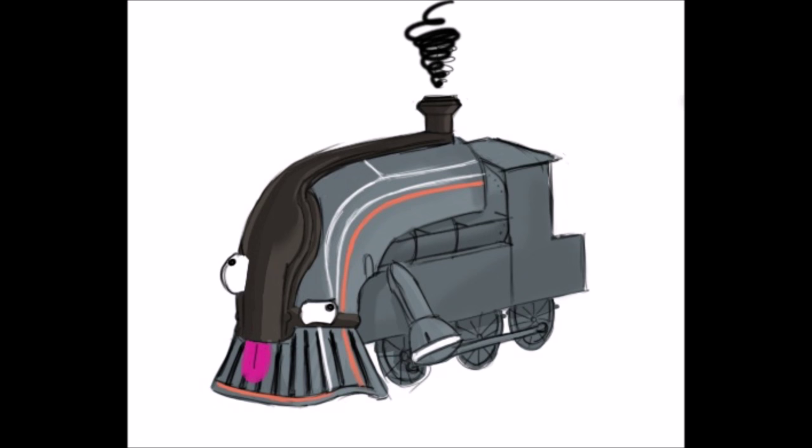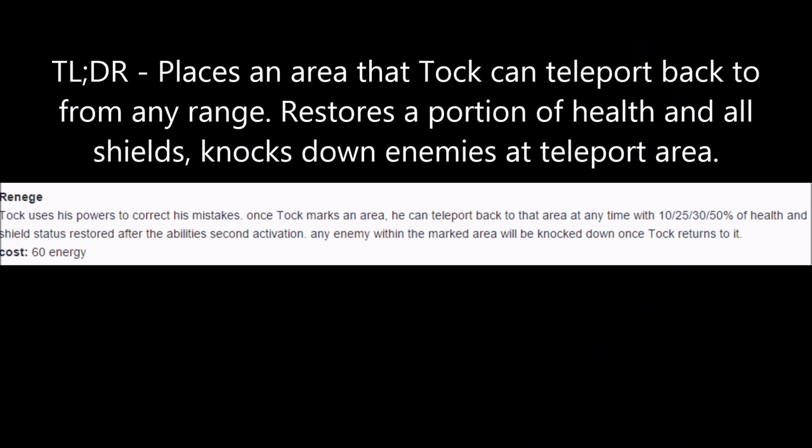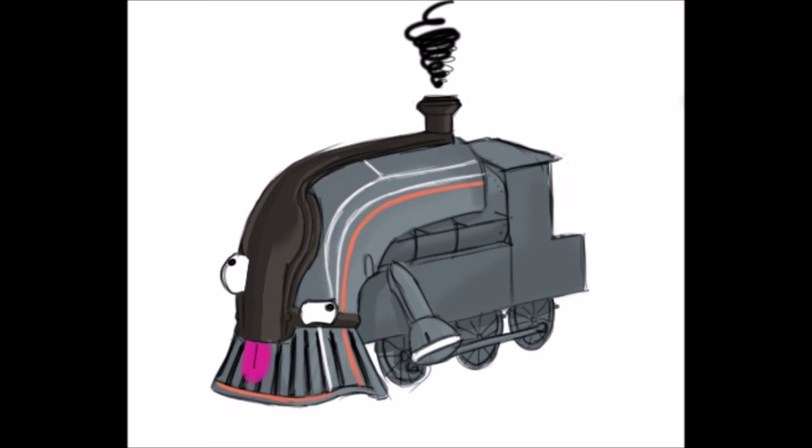TOC's third ability is Reneg. Upon activation, TOC marks the targeted area. Upon activating Reneg again, TOC immediately teleports himself to the targeted area, healing himself for a portion of his health and immediately regaining his shields. Any enemies in the targeted area will be knocked down when TOC teleports to it. It's important to note that TOC can use Reneg from any range, which can be handy for quick escapes.